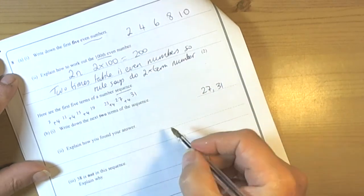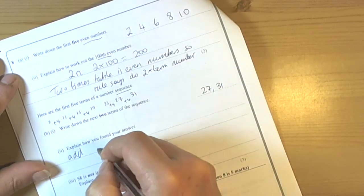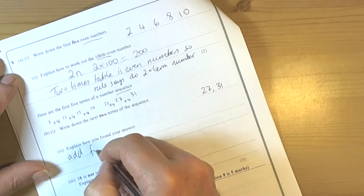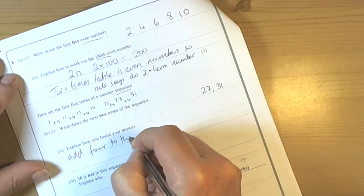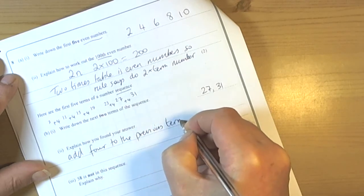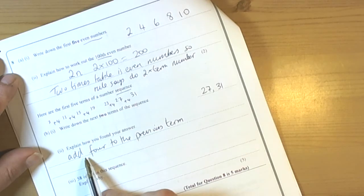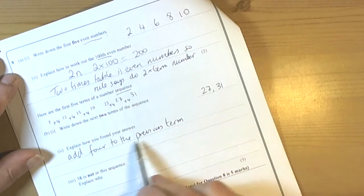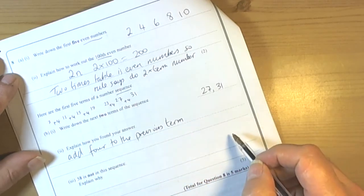Explain how you found your answer. Add 4 to the previous term. Could write more. We could write to get the next term we add 4 to the previous term. Add 4 to the previous term would give you the mark.